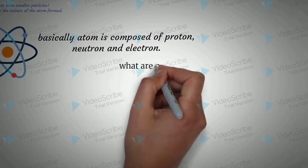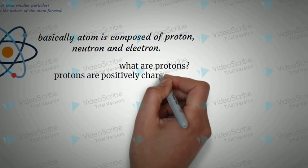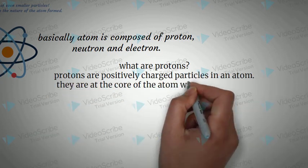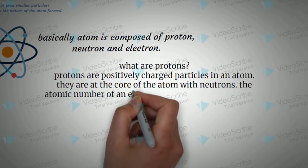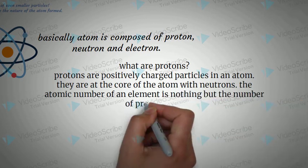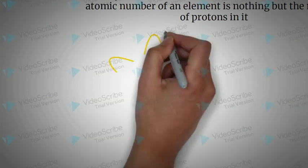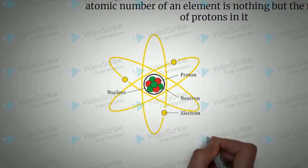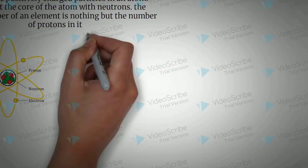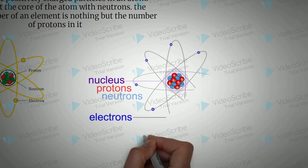What are protons? Protons are positively charged particles in an atom. They are at the core of the atom with neutrons. The atomic number of an element is nothing but the number of protons. You can see here in the nucleus there are two things: proton and neutron.